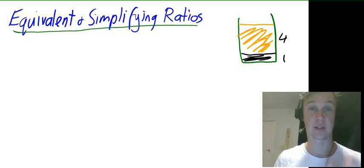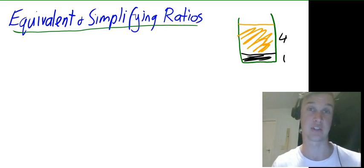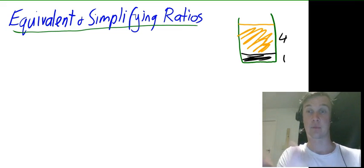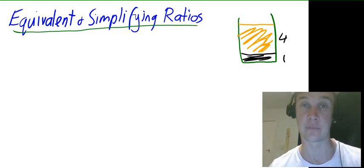In this video we're going to be looking at equivalent and simplifying ratios. To do that as an example I'm going to use my Milo scenario from the previous video.